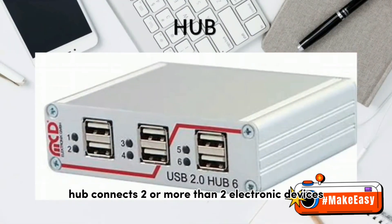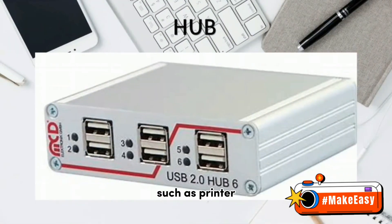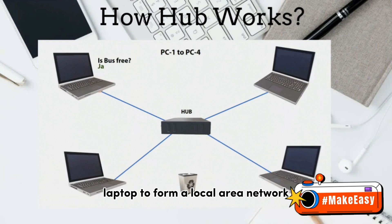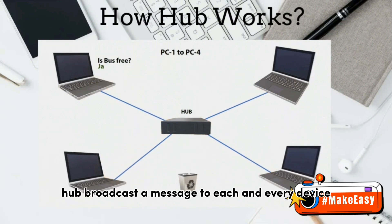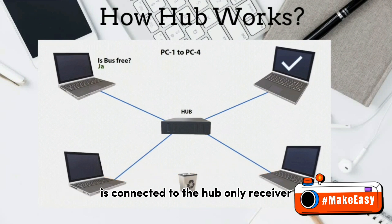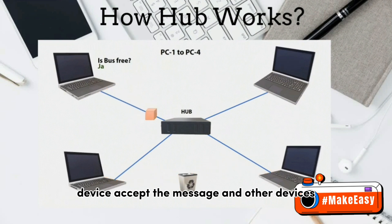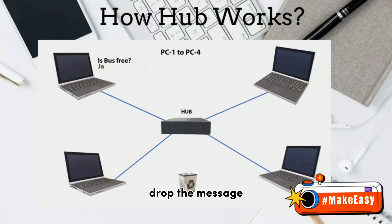Hub connects two or more electronic devices such as printer, scanner, computer, and laptop to form a local area network. As you can see in this figure, hub broadcasts a message to each and every device connected to it. Only the receiver device accepts the message and other devices drop the message.